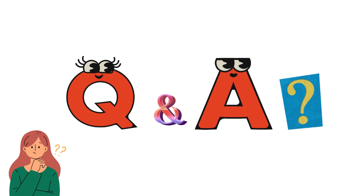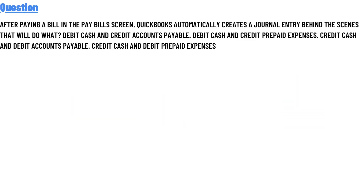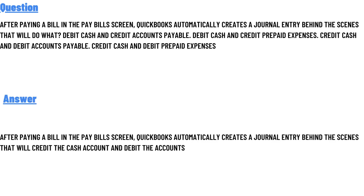Today's question is: after paying a bill in the Pay Bills screen, QuickBooks automatically creates a general journal entry behind the scenes. What will it do? Option A: debit cash and credit accounts payable. Option B: debit cash and credit repair expense. Option C: credit cash and debit accounts payable. Option D: credit cash and debit repair expenses. The correct answer is Option C.